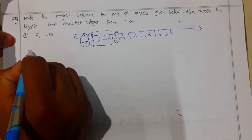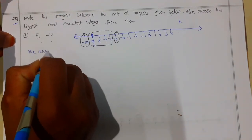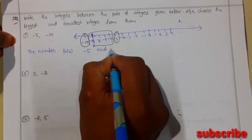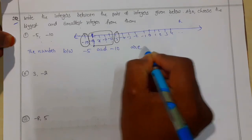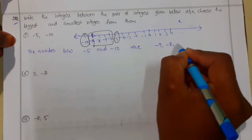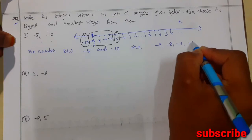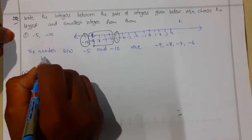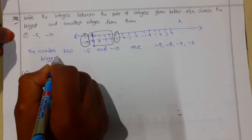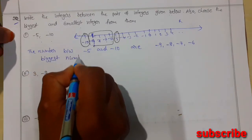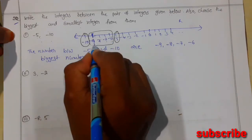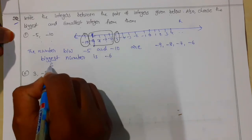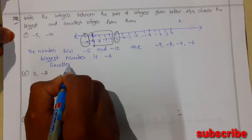So we can write the integers between minus 5 and minus 10 as: minus 9, minus 8, minus 7, minus 6. The biggest number is the rightmost number, which is minus 6. The smallest number is minus 9.